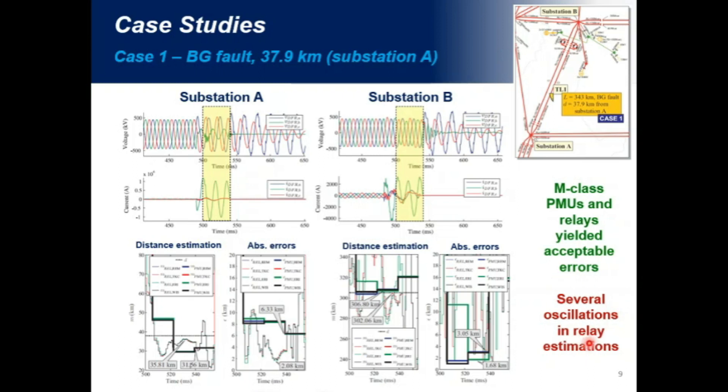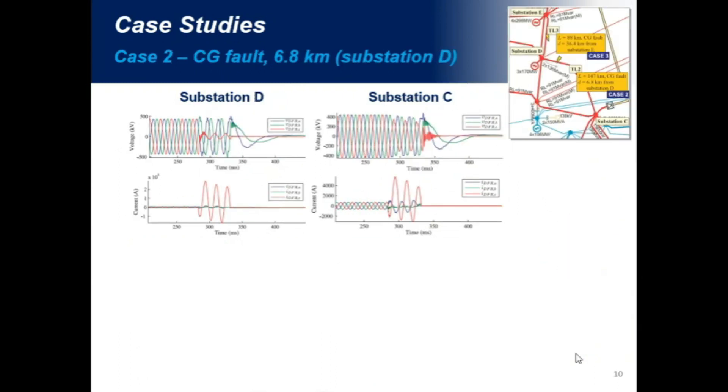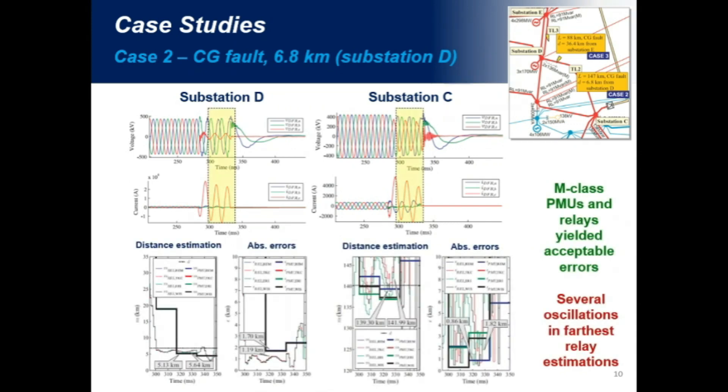In case two, we have a very similar behavior. Again, the errors here at substation D did not exceed the order of two kilometers for both PMU and relay estimations. And at the other side, at substation C, we obtained even more accurate estimations, such that errors did not exceed the order of 1.8 kilometers. Again, M-class PMUs yielded acceptable errors, and we could verify the oscillations, more oscillations in the relay during the analysis of this case.